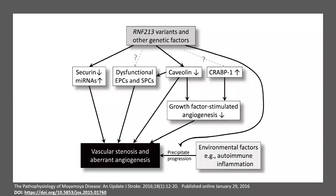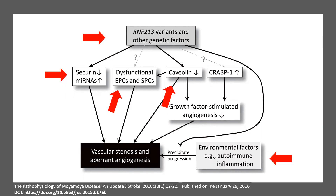To make that clearer, this algorithm shows how everything begins with variants of RNF-213 and other genetic factors. At the same time, environmental factors and immune inflammation contribute to aberrant angiogenesis. There is overexpression of microRNAs, dysfunctional endothelial cells, and the caveolin-1 protein. The caveoli are scaffold proteins appearing in the invagination of endothelial cells, and they intervene in vessel genesis. Downregulation of them also contributes to aberrant angiogenesis, ultimately leading to vascular stenosis.